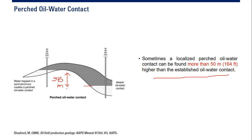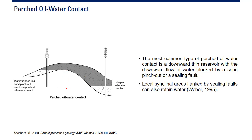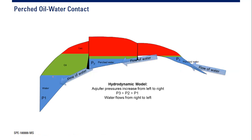The most common type of perch oil-water contact is a downward-thinning reservoir with the downward flow of water blocked by a sand pinch-out or a ceiling fault. Downward thinning means the reservoir pinches out downward. Local cyclical areas flanked by ceiling faults can also retain water, creating perch OWC conditions.